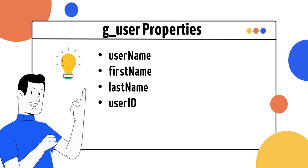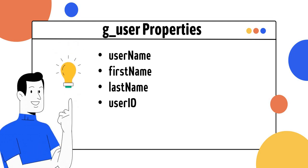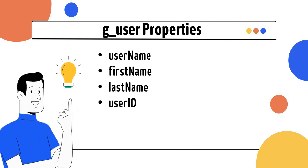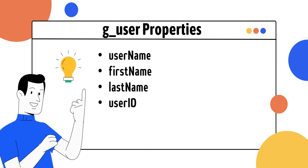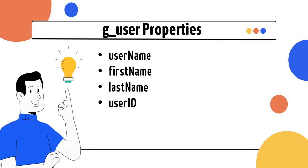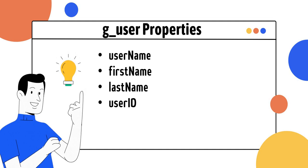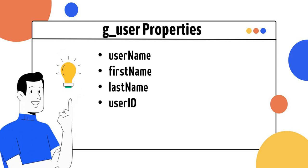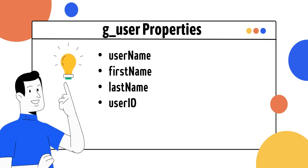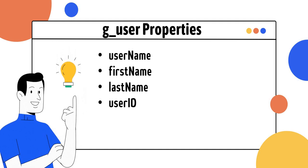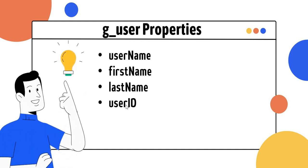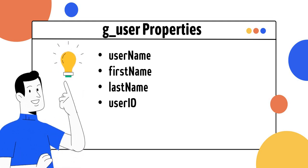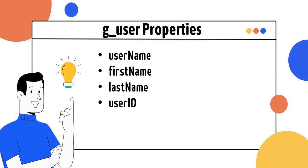Next are the g_user properties available out of the box in ServiceNow. The first is userName, which provides the login name of the user — for example, for the System Administrator you would use 'admin'. The firstName and lastName properties return the first and last name respectively of that user. Finally, userId returns the sys_id of that user, which is very important for ServiceNow developers.